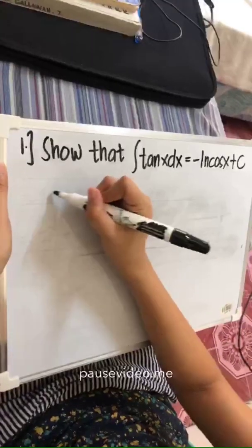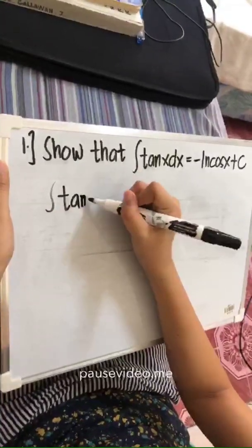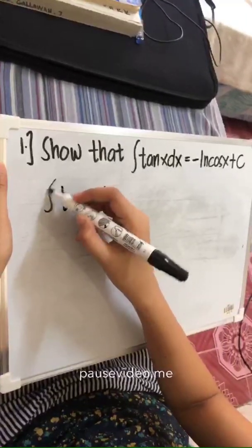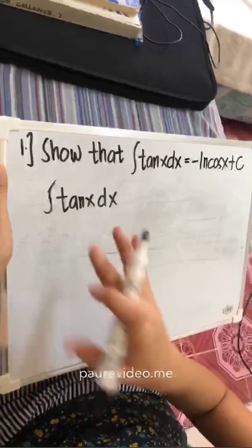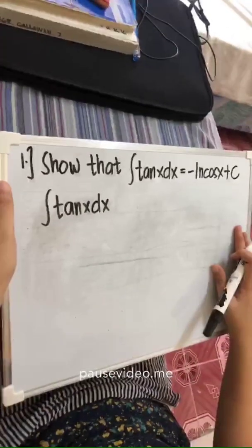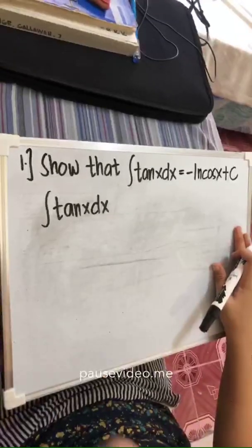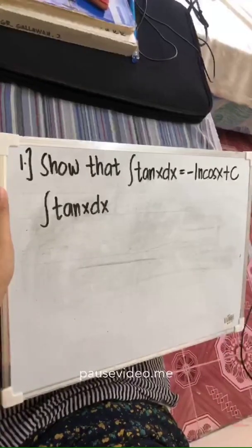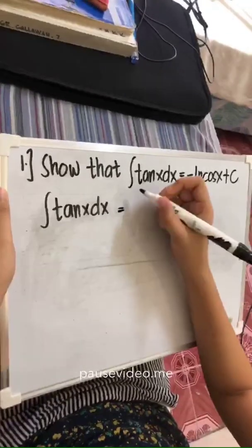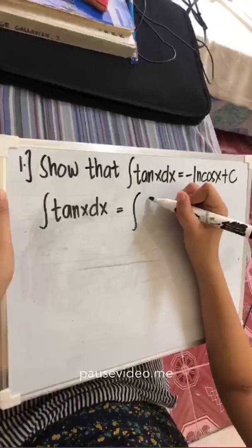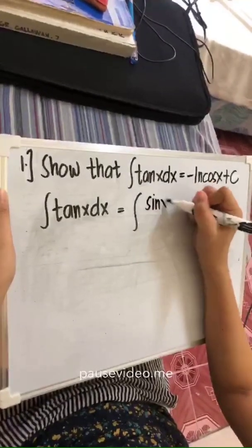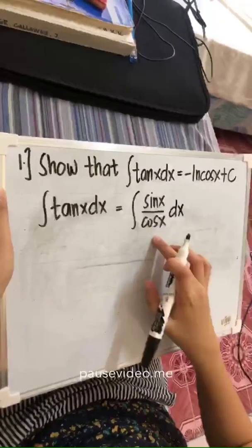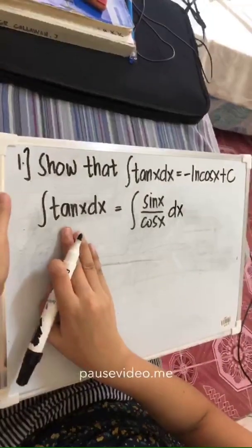We have the integral of tan x dx. From simple trigonometric identities, we know that tan x is also equivalent to sin x over cos x. So we can also write this as the integral of sin x over cos x dx.